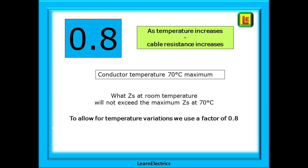We say that the maximum permitted temperature for most copper cables is 70 degrees Celsius, and we must do whatever we can to keep the cable temperature below this. We've just calculated the maximum tabulated values for ZS. What we must do now is ensure that even at 70 degrees, even if the temperature increases and causes the resistance to increase, the resistance in ohms will never exceed the tabulated value. The scientists tell us that we can calculate this by using a factor of 0.8 to downsize the values to give us a target resistance measurable at room temperature.